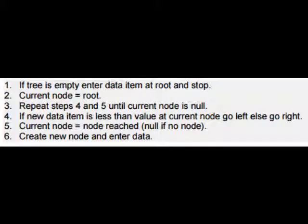The steps for adding data to a binary tree are: if the tree is empty, enter the first data item at the root. Compare the new data with the current data. If the new data is less than the current data, follow the left pointer.